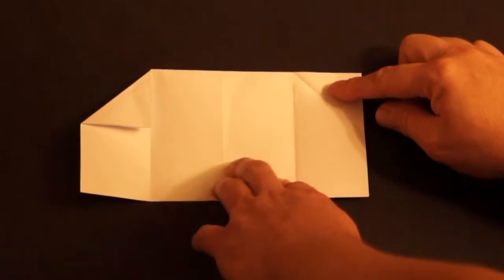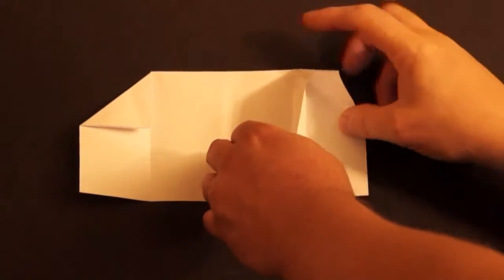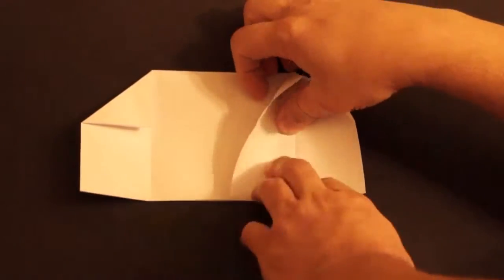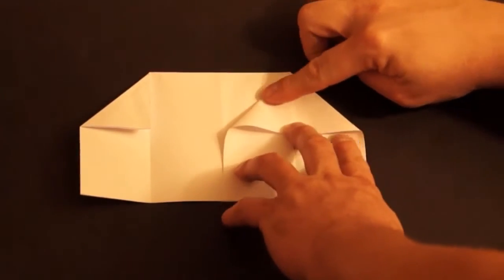Next we lift up this flap. Open the end. Make sure it folds on that crease. Then press the top down to make a triangle.